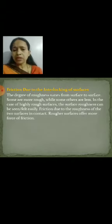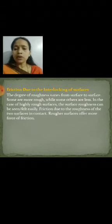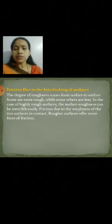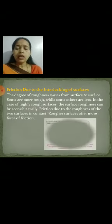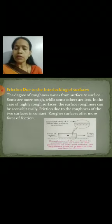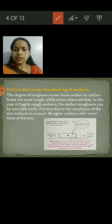First, friction due to the interlocking of surfaces. Every surface is rough — maybe more or less. This degree of roughness varies from surface to surface. In highly rough surfaces, the roughness can be seen or felt easily. Rougher surfaces offer more force of friction. Here, hills and valleys are shown on the rough surfaces.